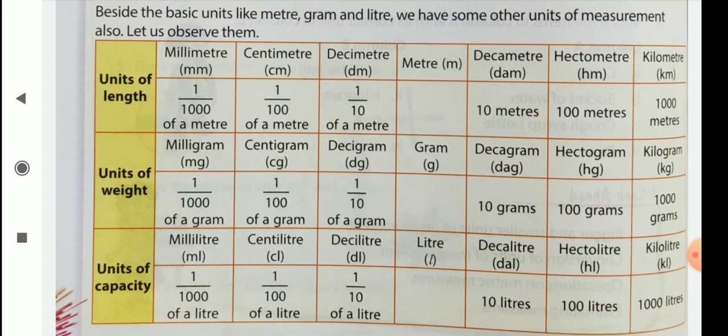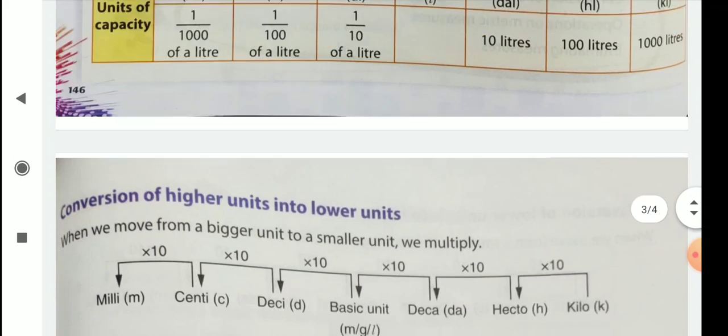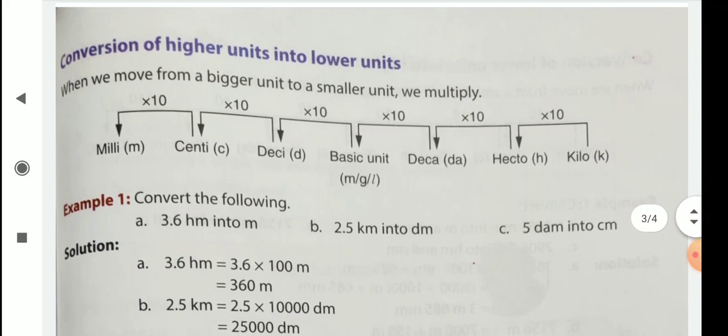So we start from meter. In left side, we go decimeter, centimeter, millimeter. And right side, if we go, we get decameter, hectometer, kilometer. Then you see the values, conversion of higher units into lower units.